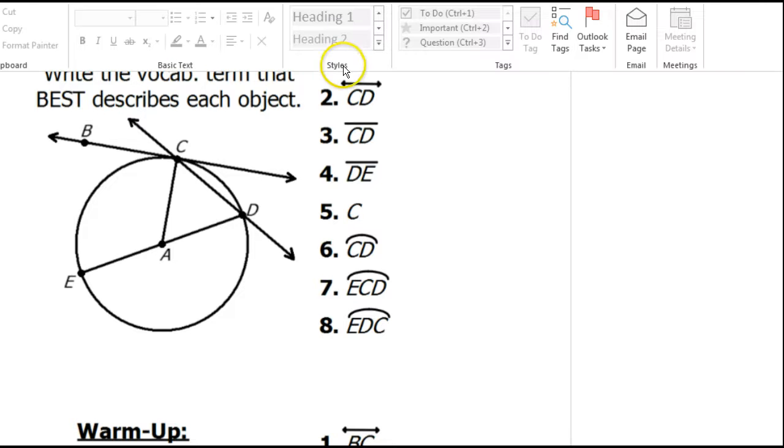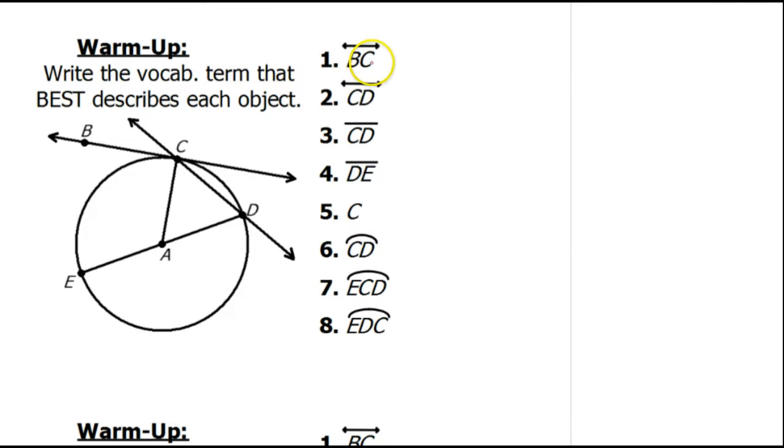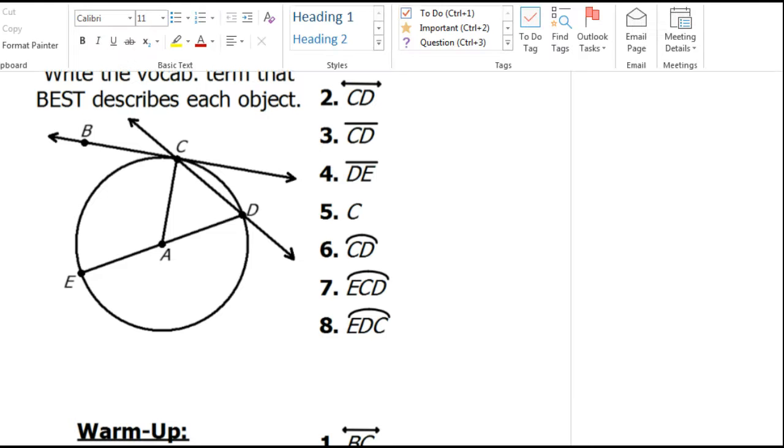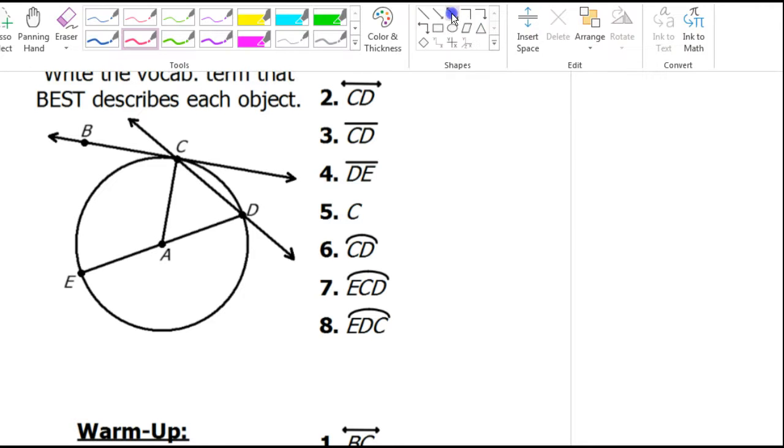Alright, so anyway, problem number 1, this has a line symbol on the top. So we're talking about line BC. So the line that goes through B and C is the line that looks like this.